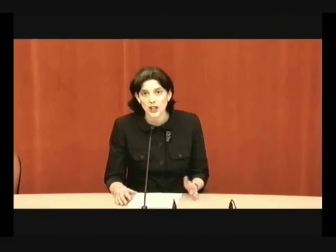Before we go any further, I want to tell you a little bit about the University of Washington. We are a large public Research One institution. We have three campuses: Seattle, and then two smaller branch campuses. The majority of our students, 42,000, are associated with the Seattle campus. The data I'll be talking about today is also connected to the Seattle campus specifically, since the branch campuses have different technological infrastructure and have different needs.